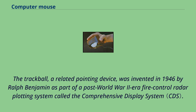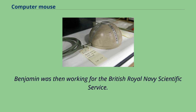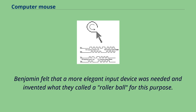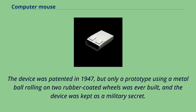The trackball, a related pointing device, was invented in 1946 by Ralph Benjamin as part of a post-World War II-era fire control radar plotting system called the Comprehensive Display System. Benjamin was working for the British Royal Navy Scientific Service. His project used analog computers to calculate the future position of target aircraft based on input from a joystick. Benjamin invented what they called a roller ball; the device was patented in 1947, but only a prototype was ever built and the device was kept as a military secret.